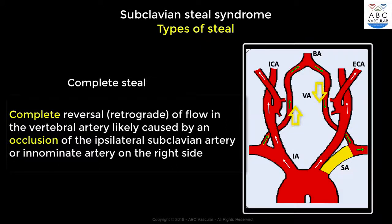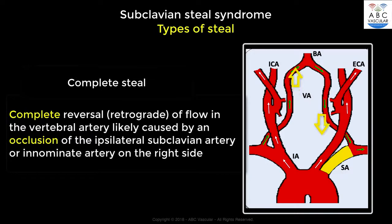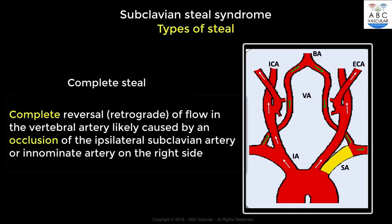A complete steal occurs when both the systolic and diastolic blood flow are retrograde through the vertebral artery ipsilateral to an obstruction or a severe stenosis of the subclavian artery or the innominate artery on the right side. Therefore, the direction of the blood flow within the vertebral artery will not be antegrade as it should normally be.